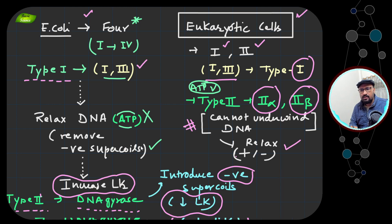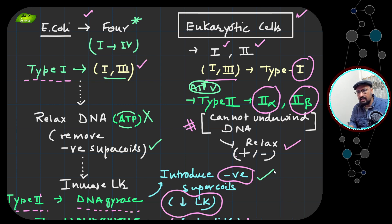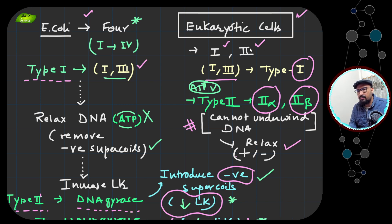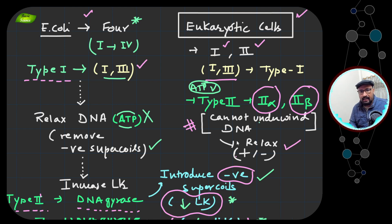In bacteria, the Type 2 topoisomerase is DNA gyrase, which introduces negative supercoils and decreases the linking number. In eukaryotic cells, topoisomerases I and III are Type 1 and do not require ATP, while Type 2 requires ATP. Importantly, Type 2 eukaryotic enzymes cannot unwind the DNA molecule but can relax both negative and positive supercoils.